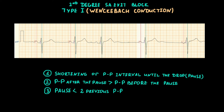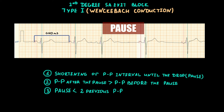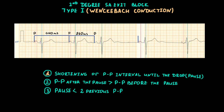Let's see a real ECG example. We see sinus irregular rhythm and a PAUSE in the middle of the ECG strip. Checking the first criteria — progressive PP shortening: the first PP interval is 1140 ms, the next is 860 ms, confirming the first criteria. The PP interval after the PAUSE is 1400 ms, which is bigger than the last PP interval before the PAUSE, confirming the second criteria. Finally, the PAUSE duration is 1460 ms, which is smaller than twice the previous PP interval, verifying the third criteria of second degree SA block type 1.